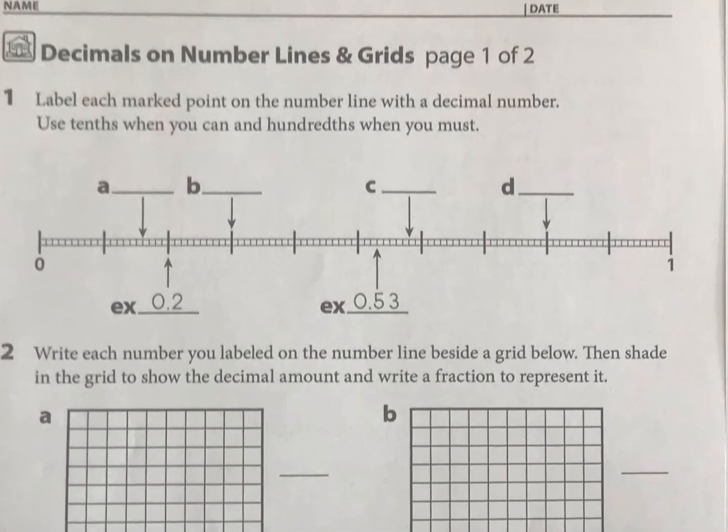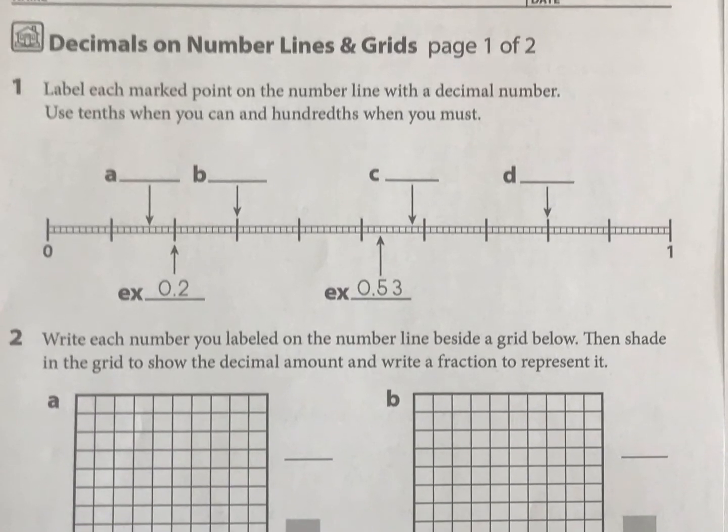First we've got this number line, and it's useful to see what's going on here. It's going from 0 to 1, and these large marks are going to be your tenths: 1 tenth, 2 tenths, 3 tenths, and so on.